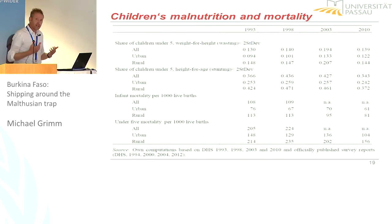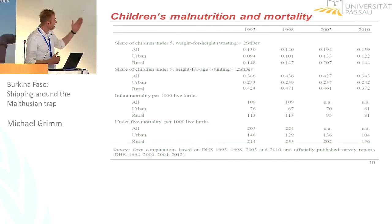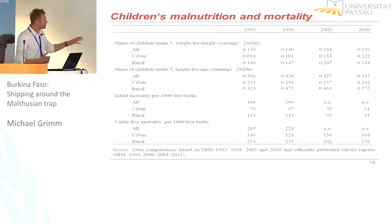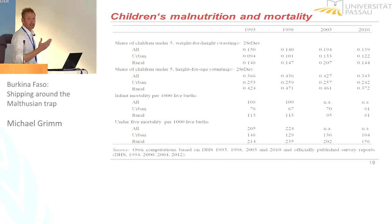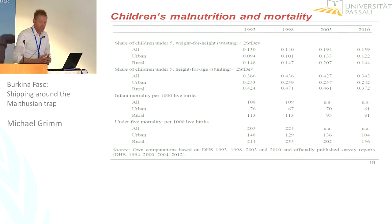I said in the beginning that we even have some evidence that this has health effects, and that's what you see here, computed from demographic and health surveys. We have wasting, stunting, and also infant mortality and under-five mortality. For all these figures, you see even an increase in the 90s, whereas in many other countries at the time it had already started to decline. And only a very modest decline in the 2000s. It could be linked to this increase in food prices — it becomes more and more expensive to meet basic needs in terms of food. So this is really worrying.